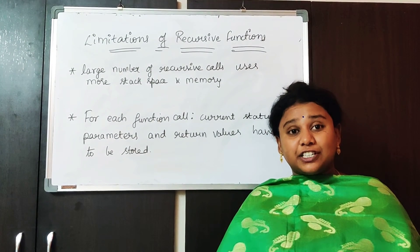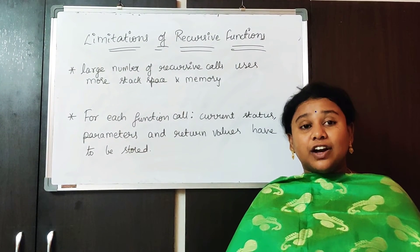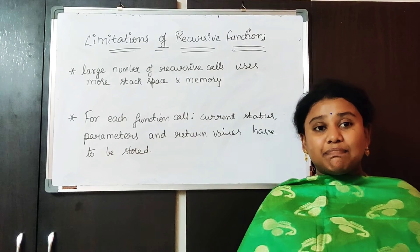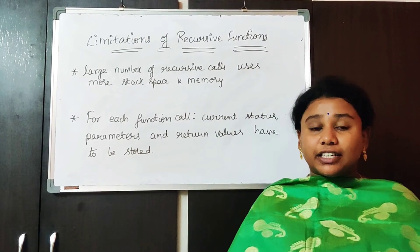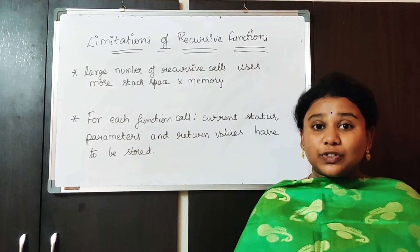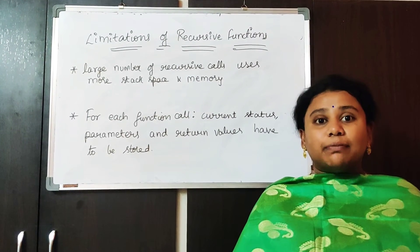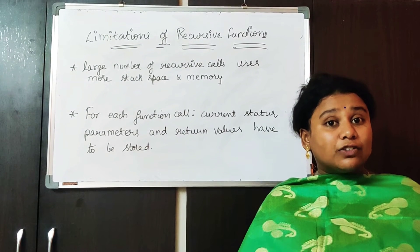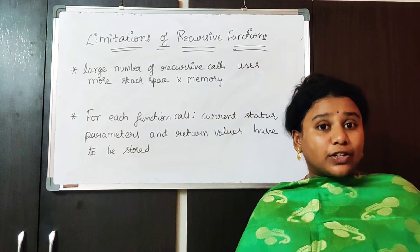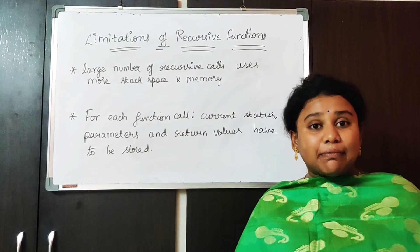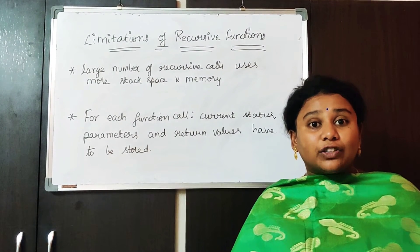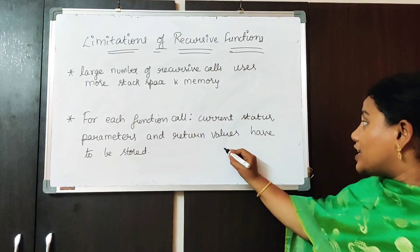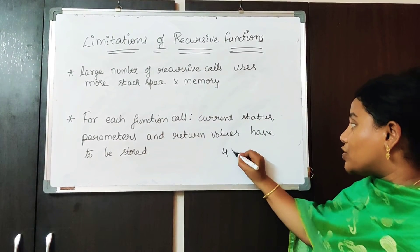Coming to the limitations of recursive functions. As we already seen two examples, the recursion concept always will reduce the coding part, but the problem with the recursive policy is — first we analyze the factorial example. What factorial has done there? n into factorial of n minus 1.